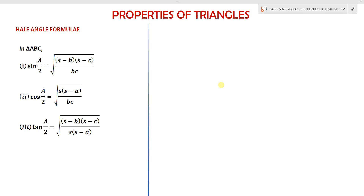In this lecture on properties of triangles, we will learn the half-angle formulas. The half-angle formulas for sine, cosine, and tangent are given here. In triangle ABC: sin(A/2) equals square root of (s−b)(s−c)/bc, cos(A/2) equals square root of s(s−a)/bc, and tan(A/2) equals square root of (s−b)(s−c) / [s(s−a)].